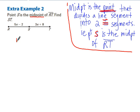So we can say length of RS is congruent to the length of ST, which means we'll be able to say since RS here is 5x minus 2, 5x minus 2 is equal to 3x plus 8.